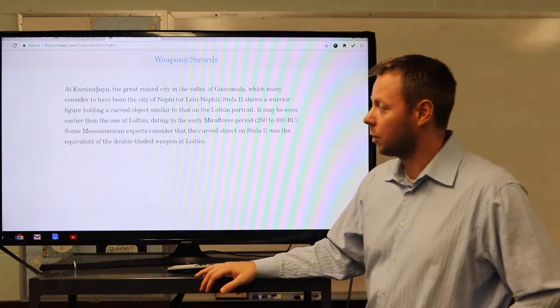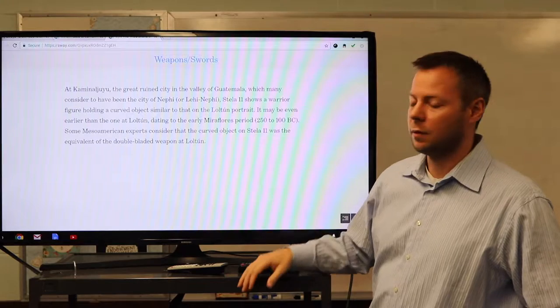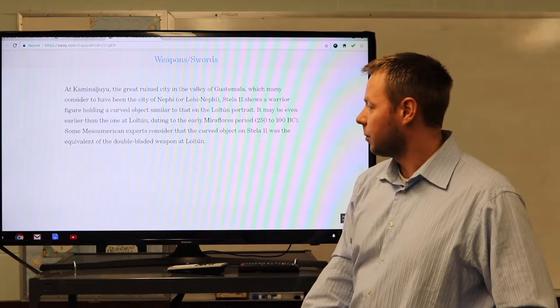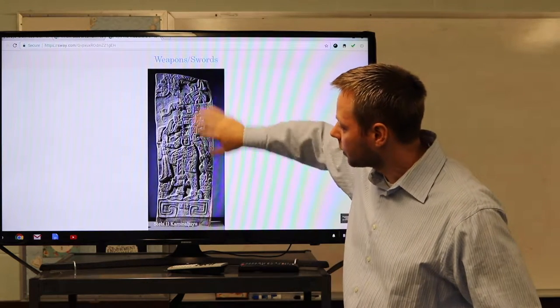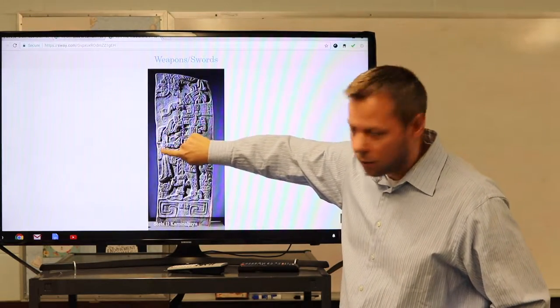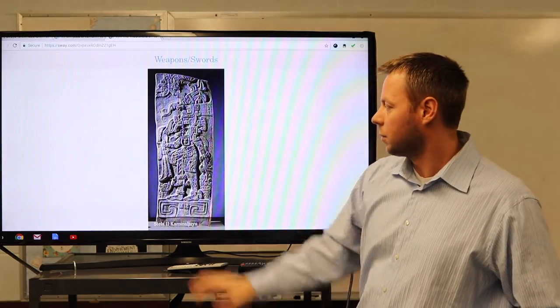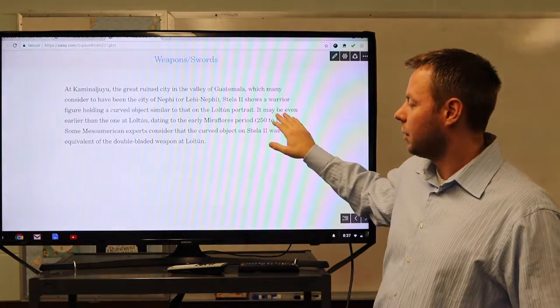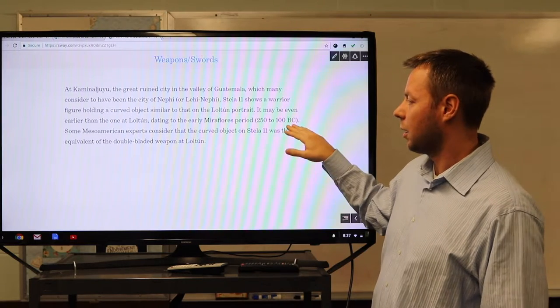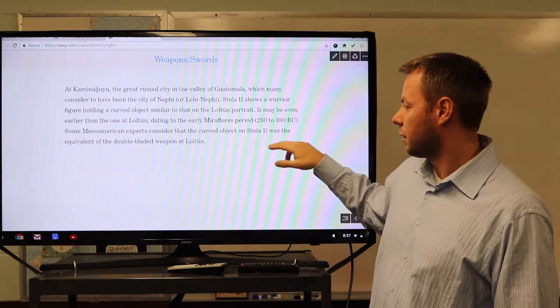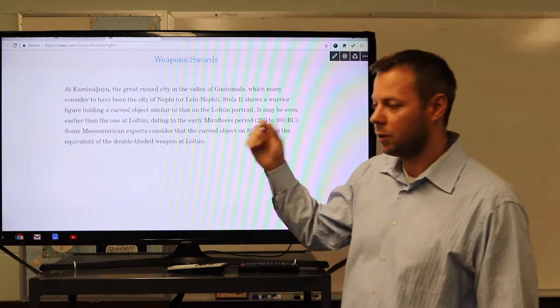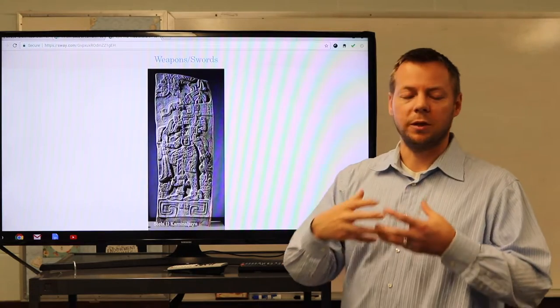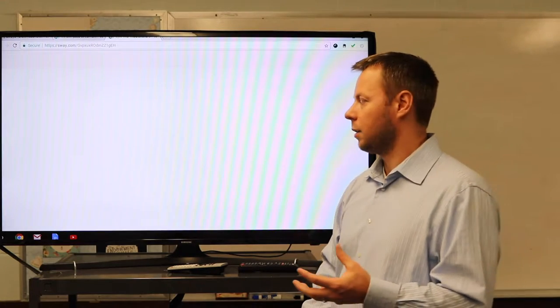At Kaminaljuyu, even closer to home, the great ruined city of Guatemala, we've talked a lot about. Sorenson thinks it's the city of Nephi. Stella 11 shows a warrior figure holding a curved object very similar to the Loltun portrait. Here, this is Stella 11. Can you see the hand right here and then the two curved handles on that blade? So it's believed that this Stella, it was the same weapon that's portrayed in the Loltun caves. It may have been earlier than the Loltun, dating between 250 to 100 BC. And some experts consider the object equivalent of double-bladed weapon in Loltun. And so they think that they're very similar. So the idea that the scimitar is anachronistic, is again one of those things that as you look deeper and as we gain more knowledge, actually becomes a strength, not a criticism.